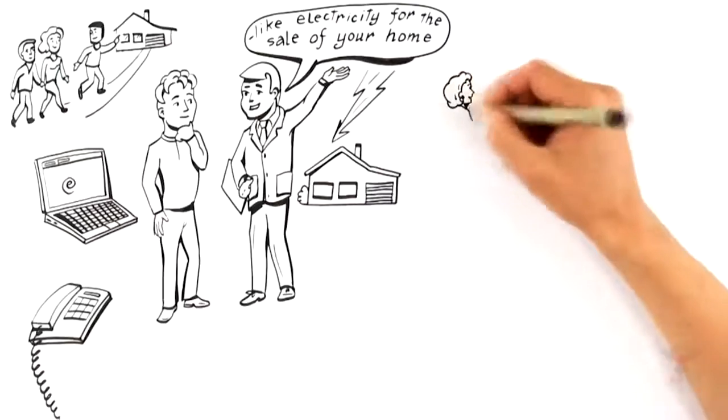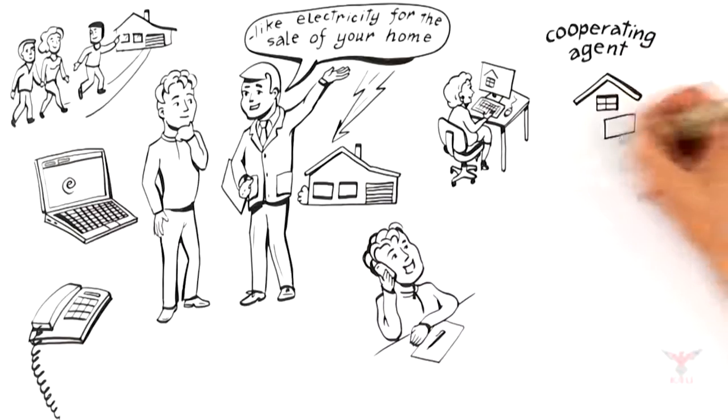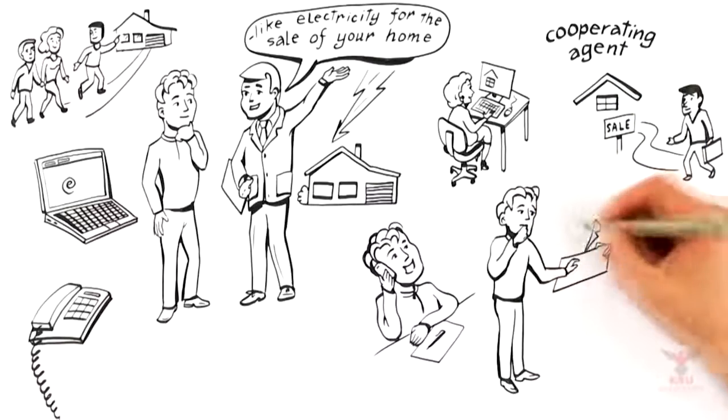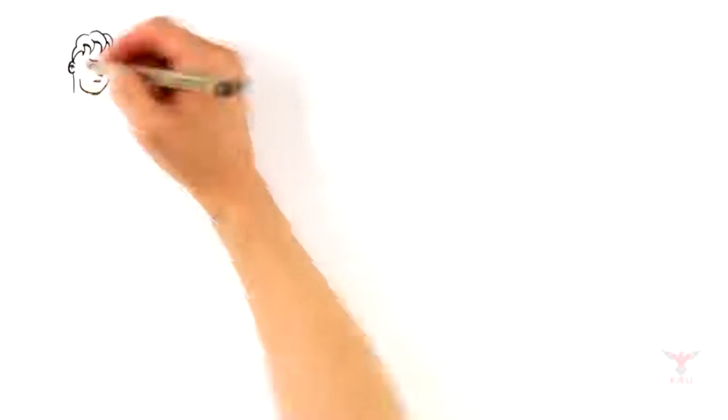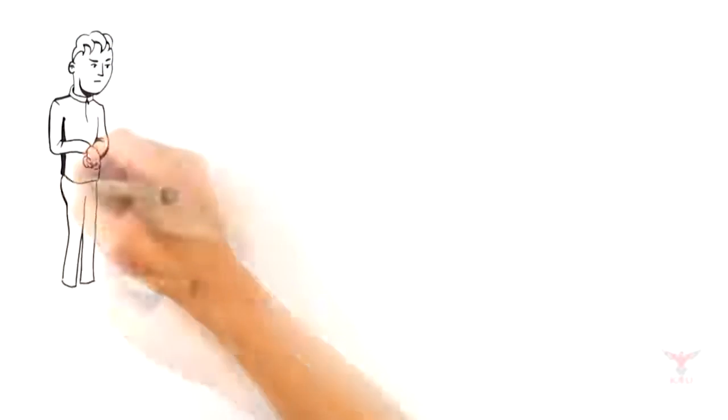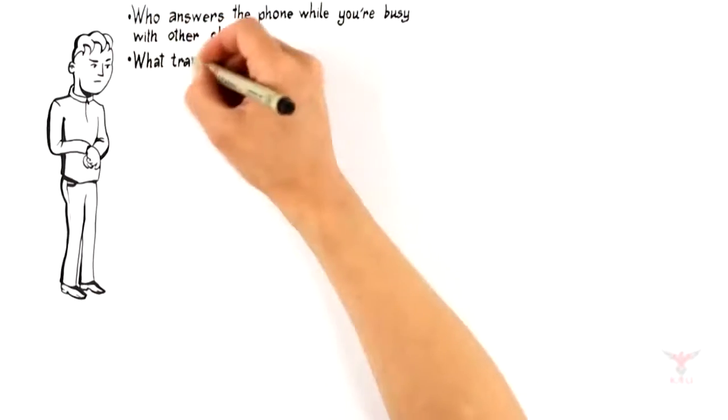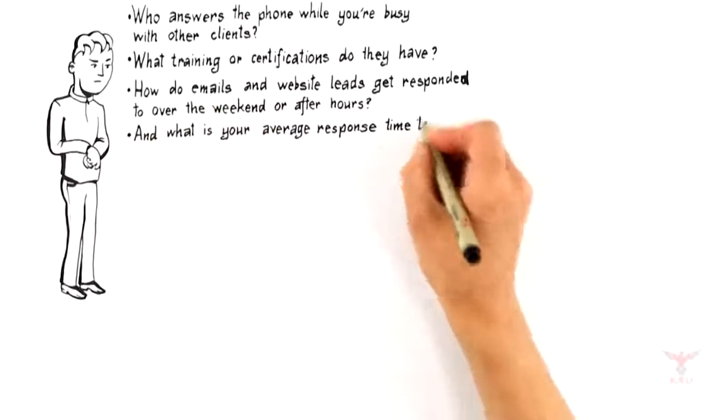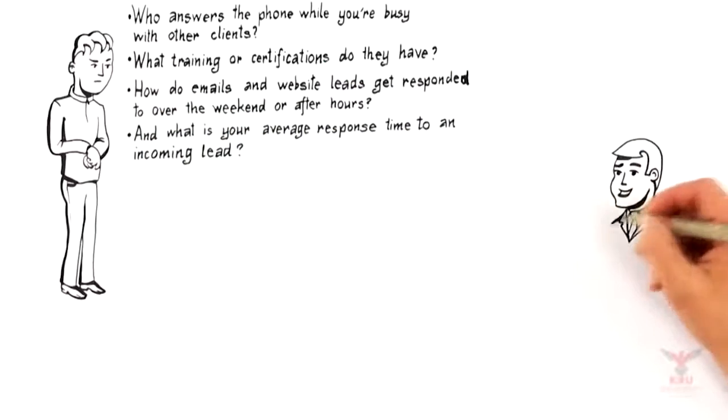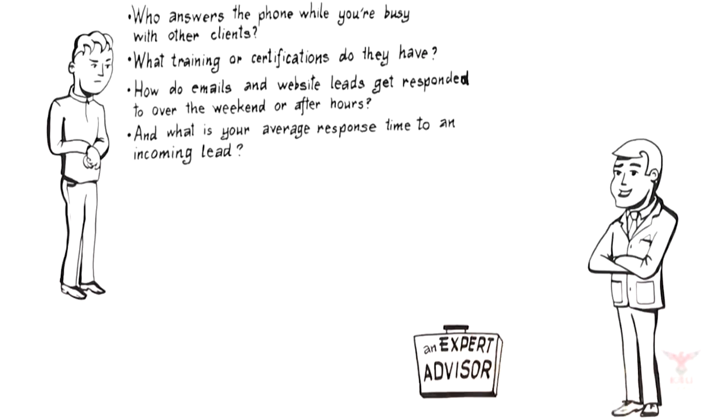When a buyer visits your home online, a cooperating agent calls to set up a showing, or someone calls from your yard sign, studies repeatedly show the fastest response wins the deal. Anything more than 15 minutes lowers the chance of your agent making contact and decreases showing your home by up to 105 times. Therefore, ask the professionals you're considering: who answers the phone while they're busy with other clients? What training or certification do they have? How do emails and website leads get responded to over the weekend or after hours? And what is their average response time to an incoming lead? An expert advisor understands they're running a business, and solid systems and processes are needed to successfully manage all of the variables in the home-selling process.